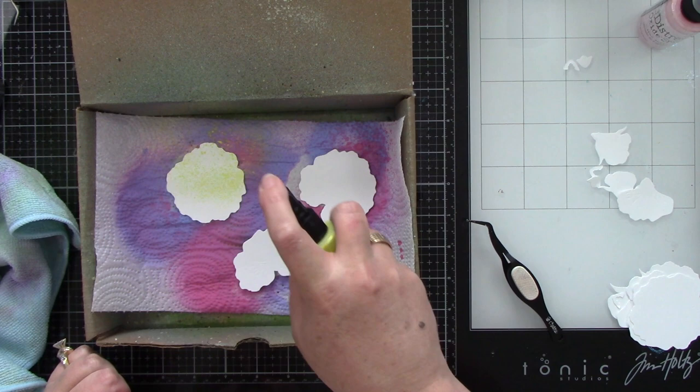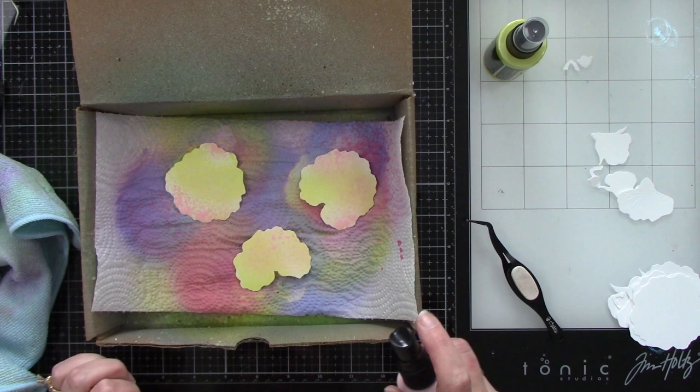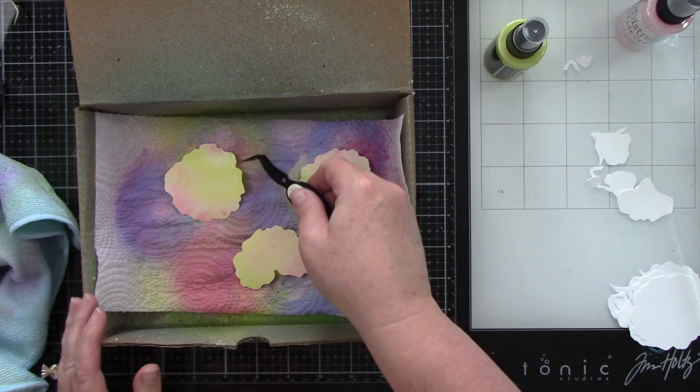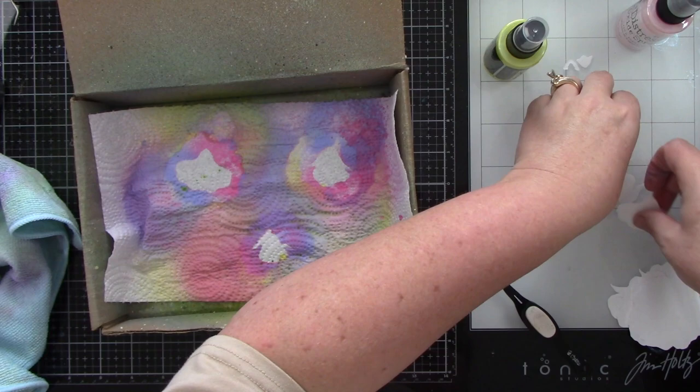Okay, this one is Squeezed Lemonade and Spun Sugar. And this was my favorite until I did the third color. But I think this is really pretty, and I love pink and yellow together. I think it's just such a fun combination.